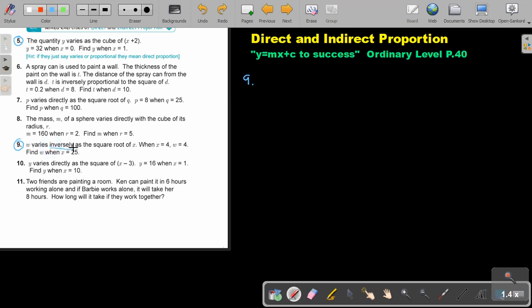W varies inversely as the square root of x. Make sure that you don't make incorrect things there. Oh, I made a mistake. It's inversely. So it's 1 over. So luckily, I picked it up.